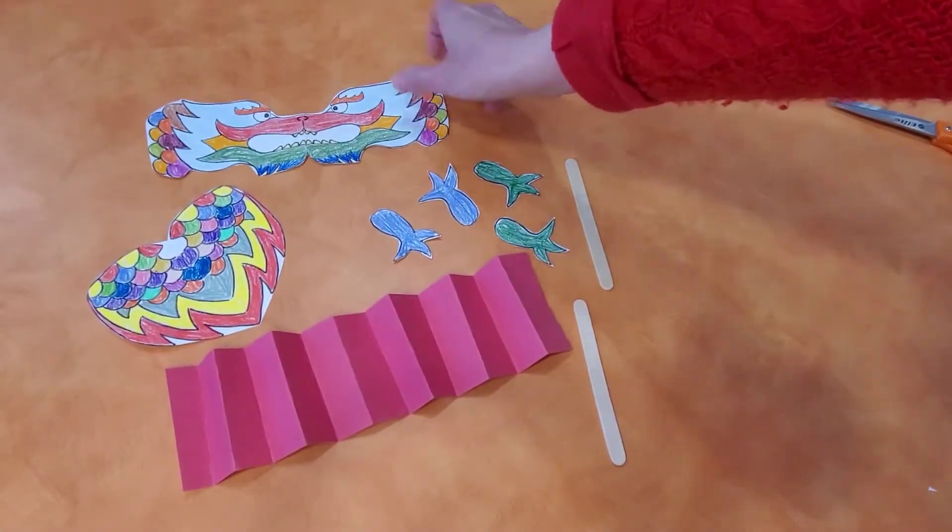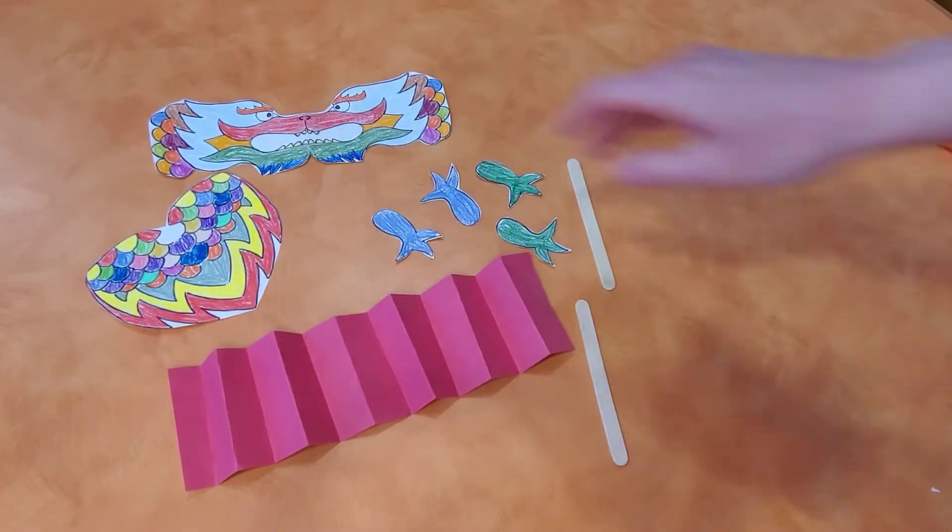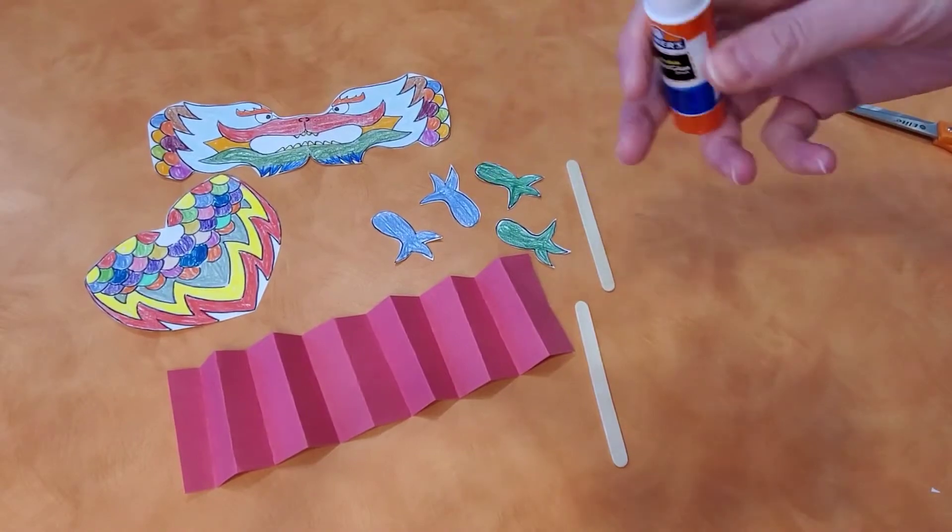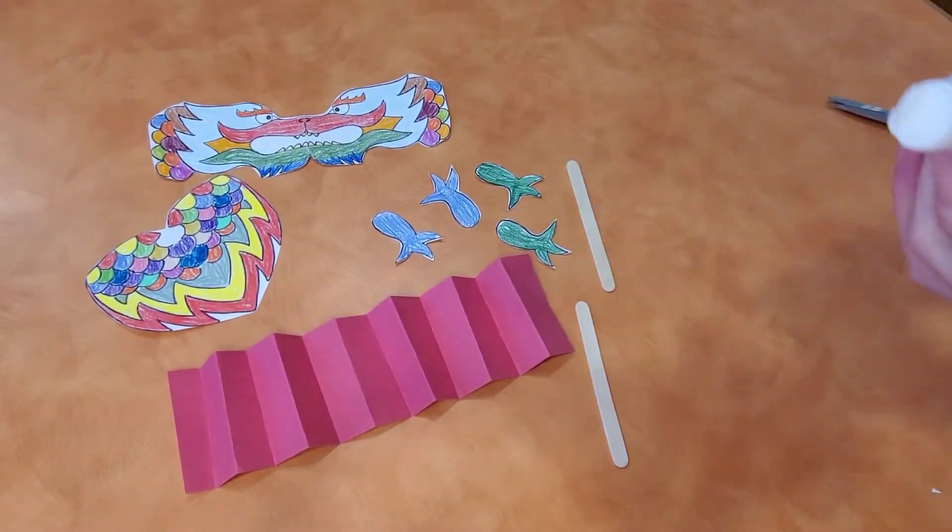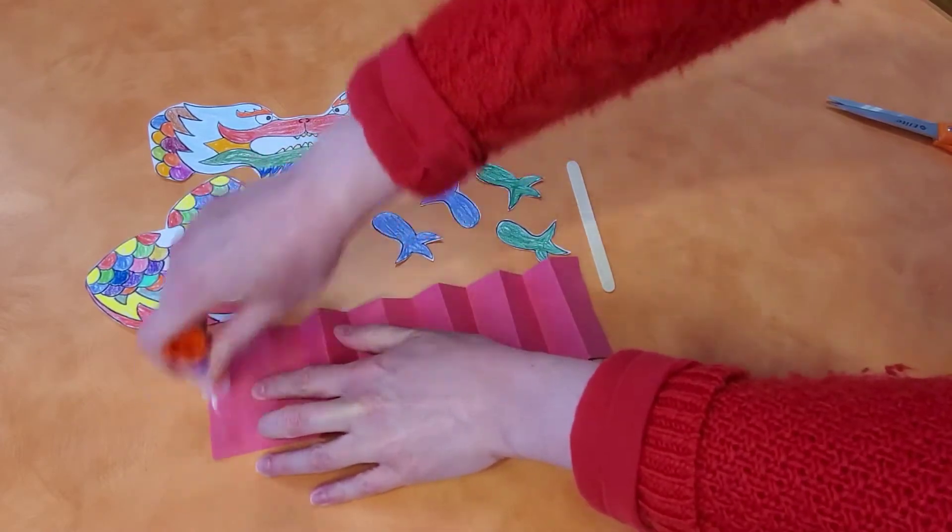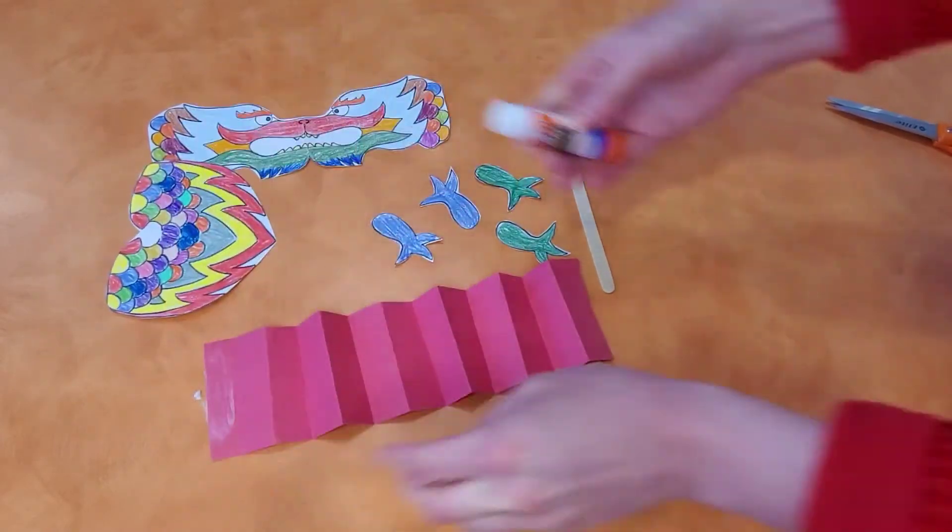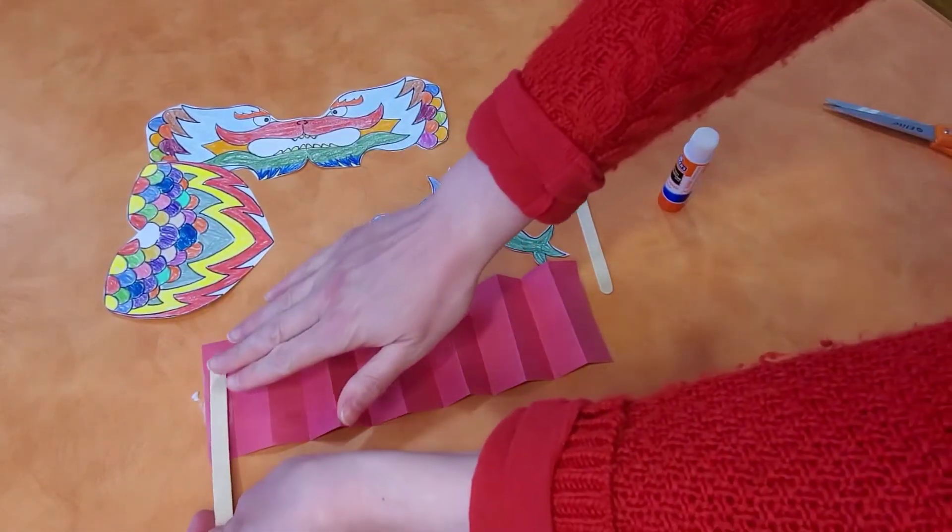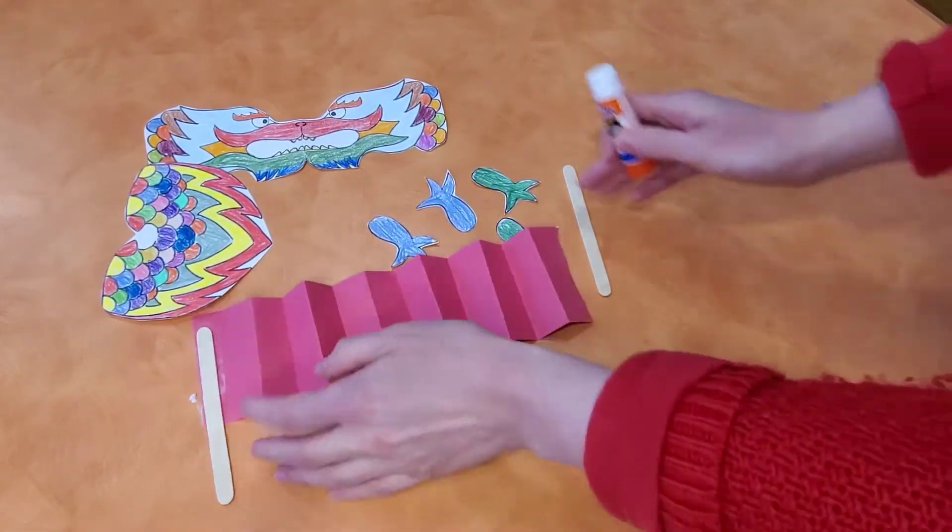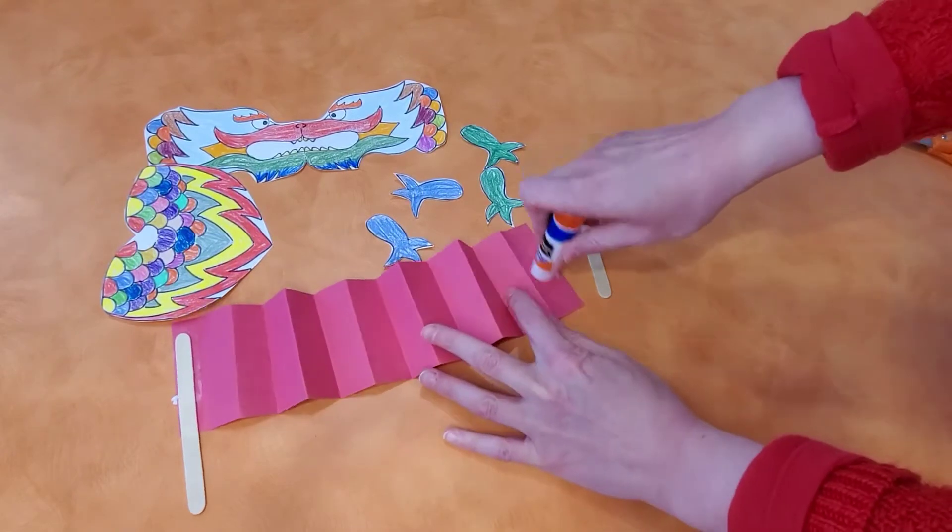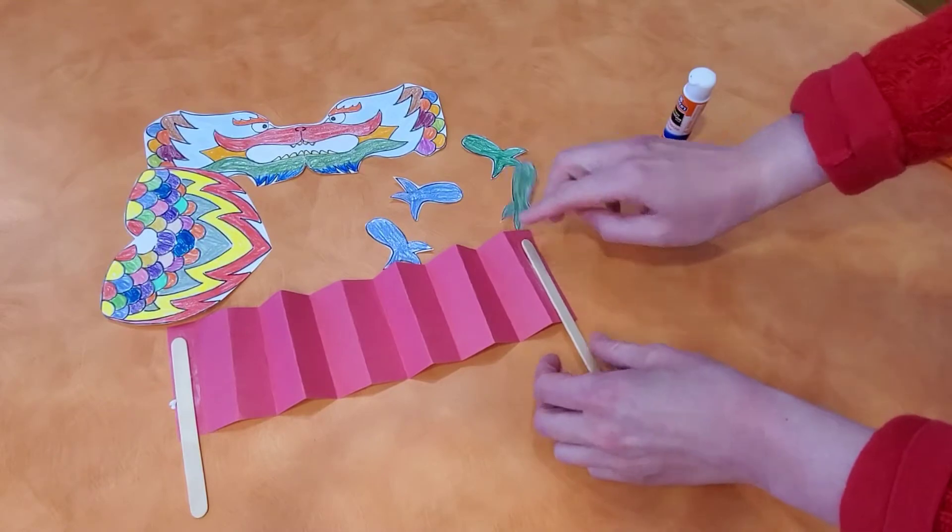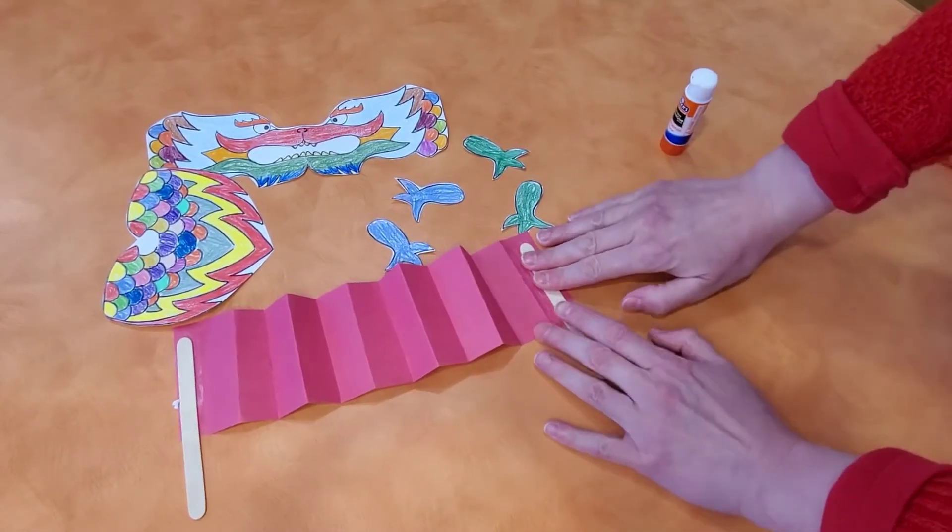Once all the pieces are colored and cut out, you can then, with glue or tape, glue the popsicle sticks on. So we're gonna put glue here for one popsicle stick. And then we're going to put glue here for the other popsicle stick. Press it down.